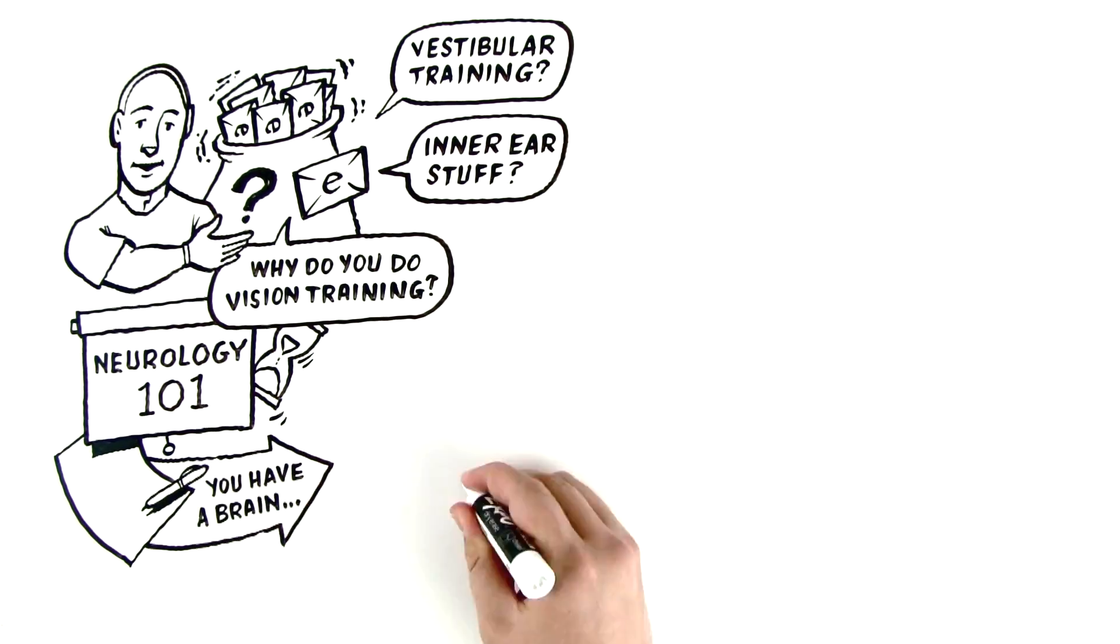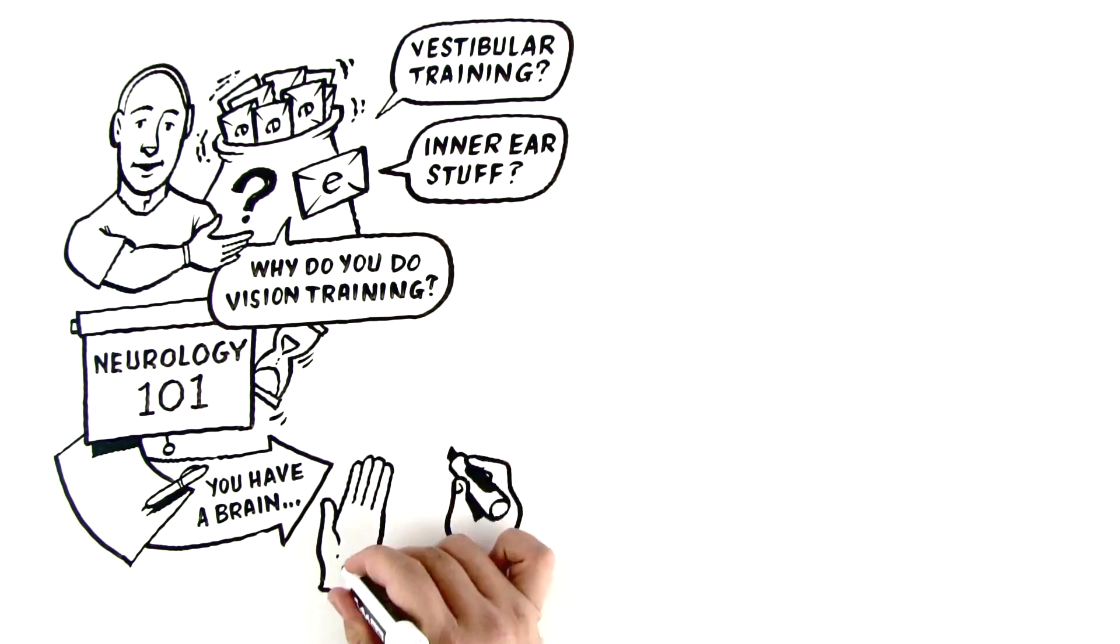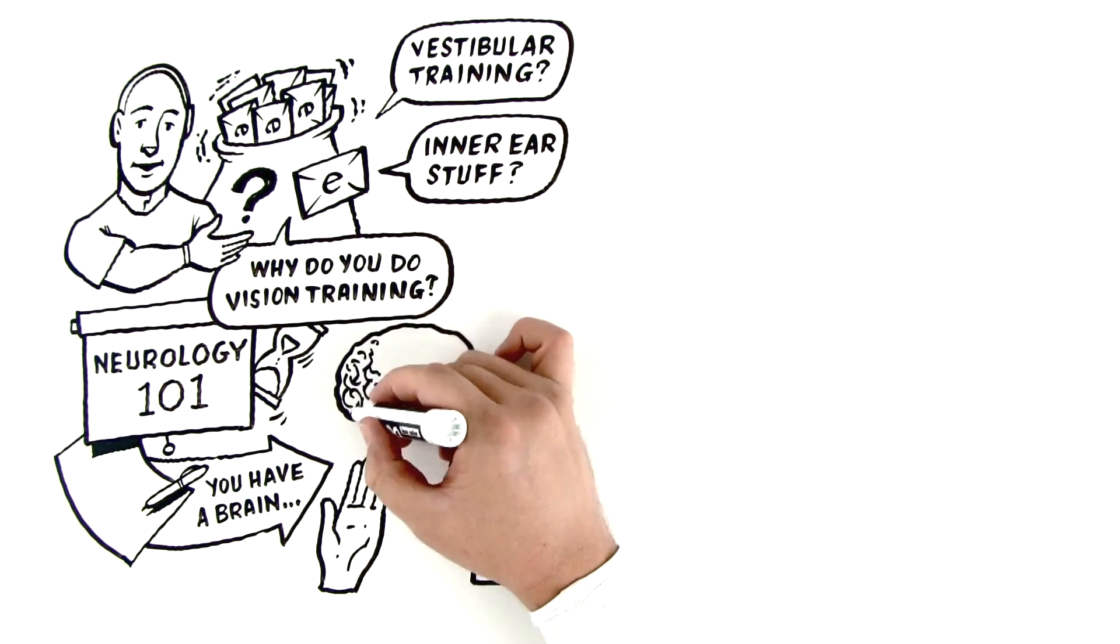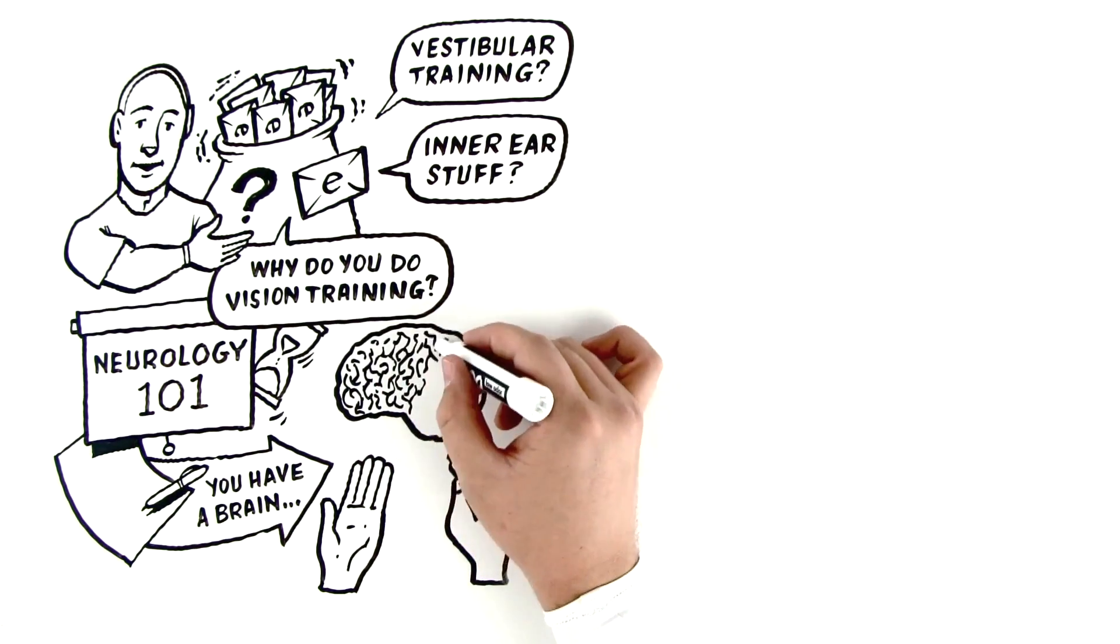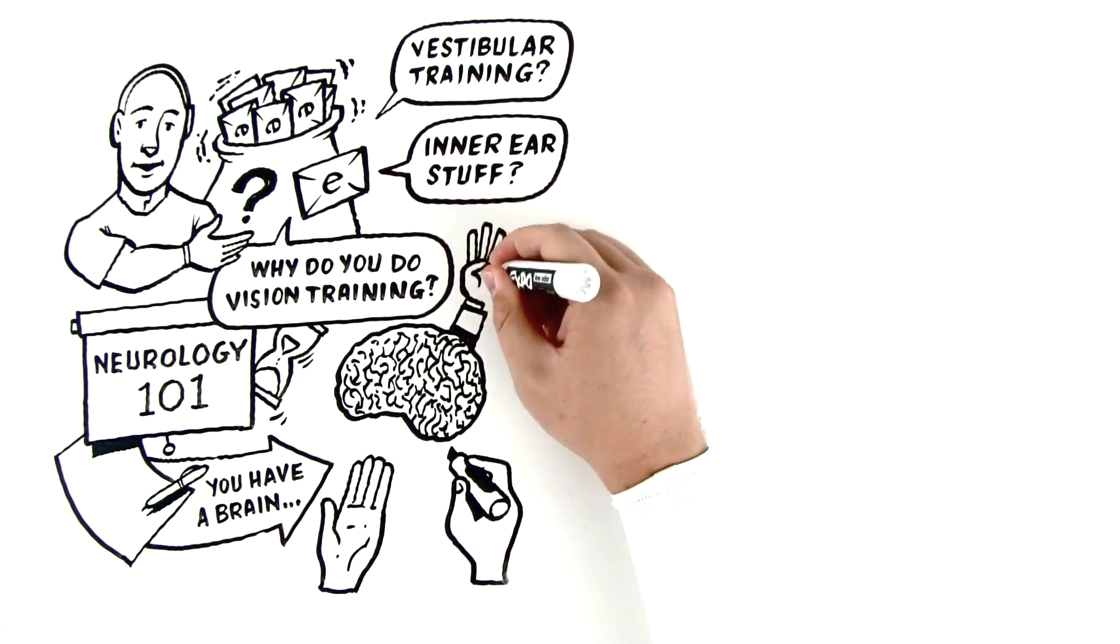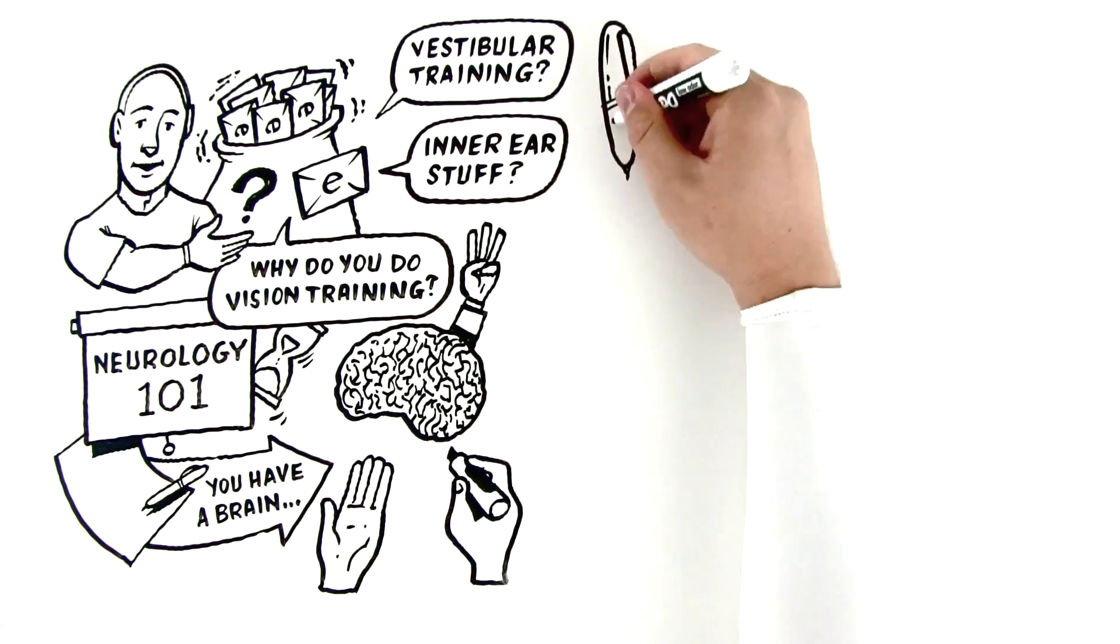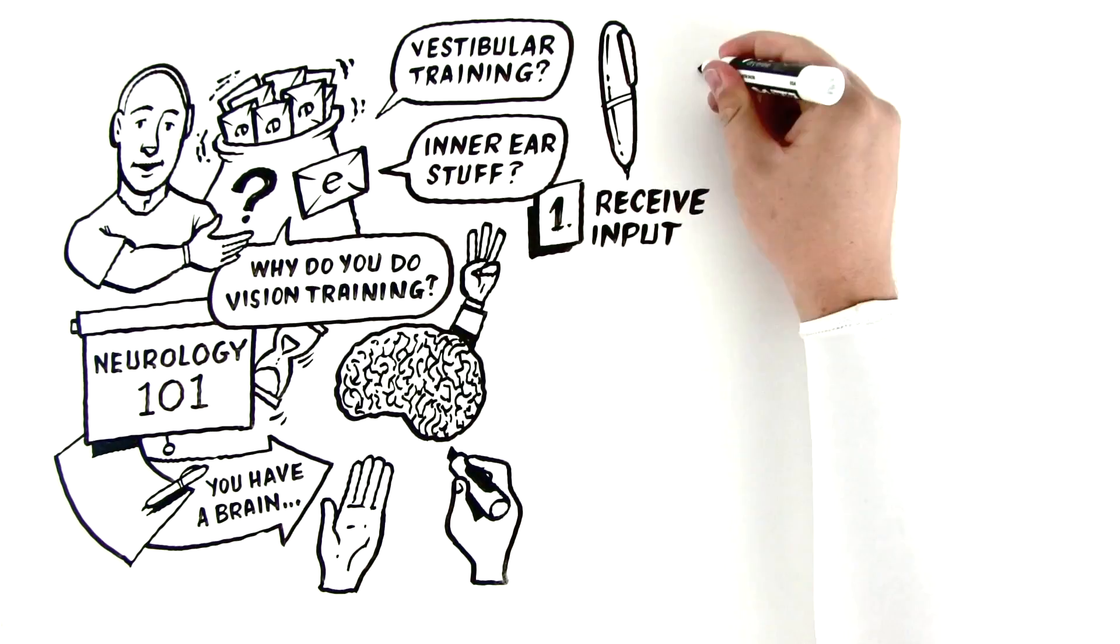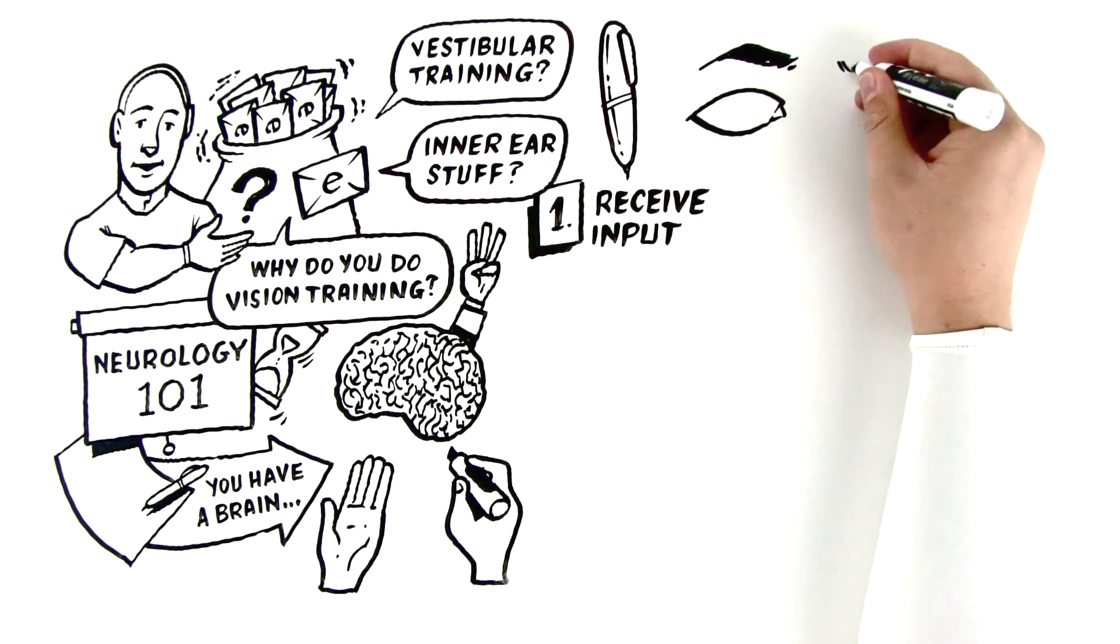You have a brain, so let's draw a brain up here. You can't see that. That's actually a test of your visual system. We're going to try a different color. There we go. A brain kind of looks like that. Now a brain basically has three primary tasks, and this is what you want to write down. First of all, it has to receive input.